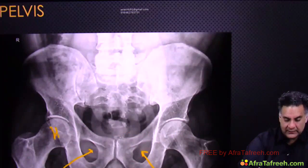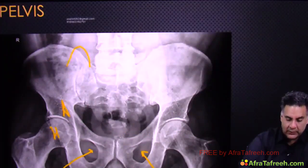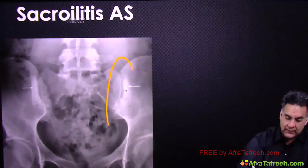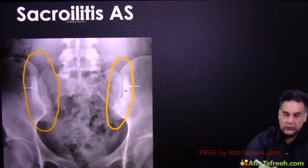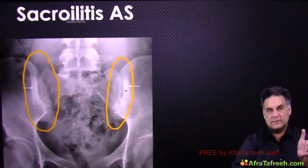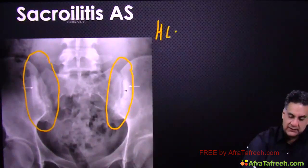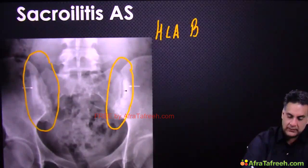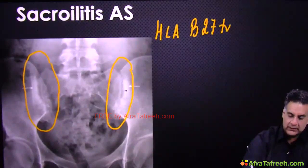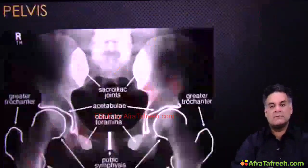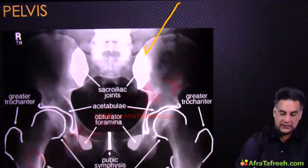For the pelvis, remember the obturator foramen, the acetabulum, and most importantly the sacroiliac area. When the SI joint is inflamed, it is called sacroiliitis. A young man with low back ache, reduced chest expansion, and HLA-B27 positive — your answer is ankylosing spondylitis. This is what the SI joint looks like on imaging.